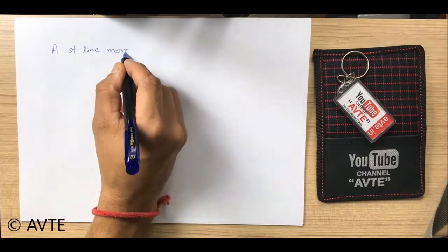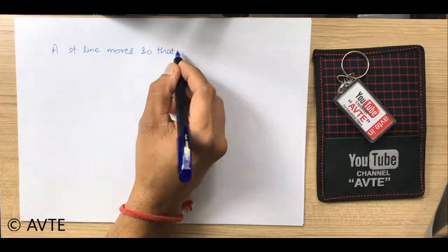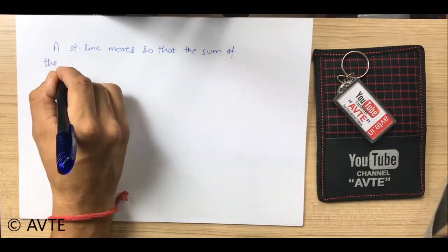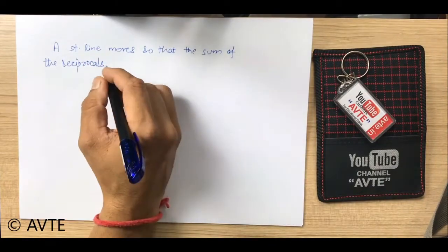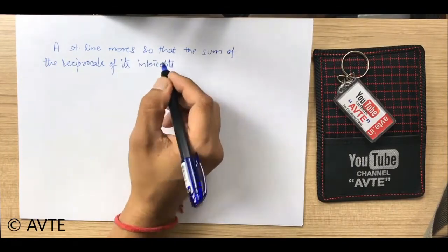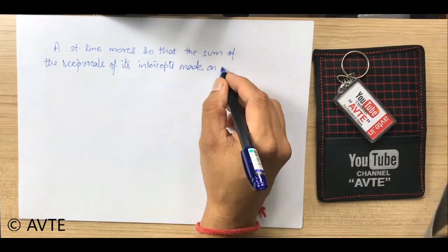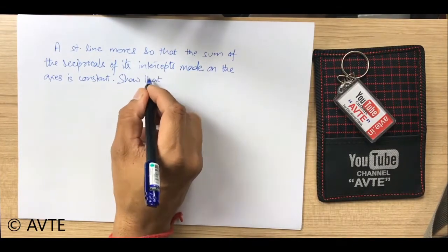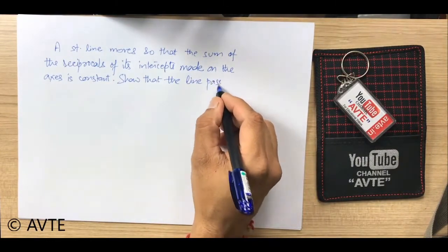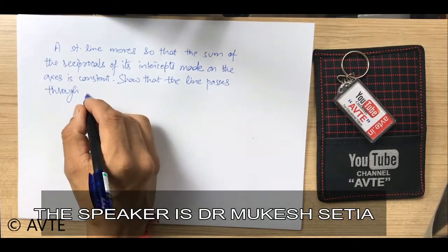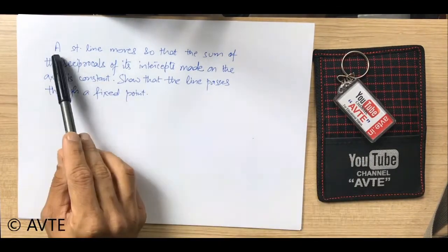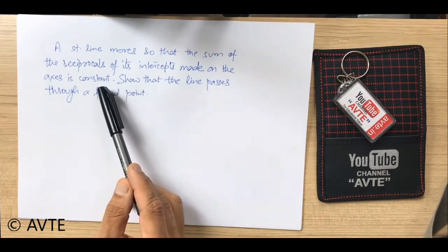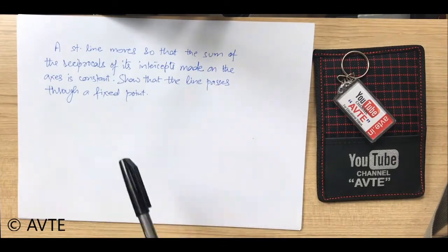A straight line moves so that the sum of the reciprocals of its intercepts made on the coordinate axis is a constant. Show that the respective line will pass through a fixed point.